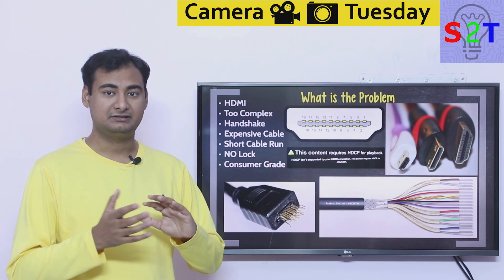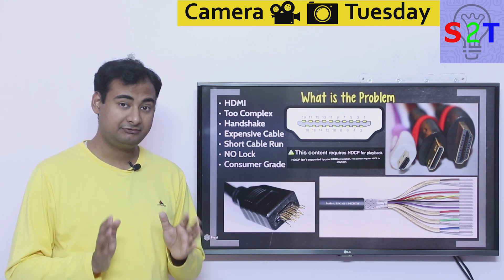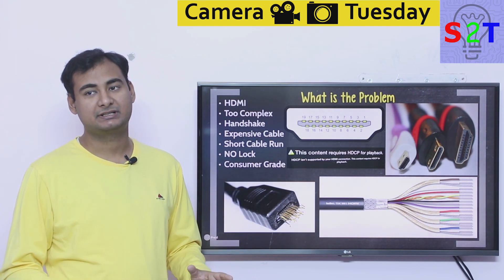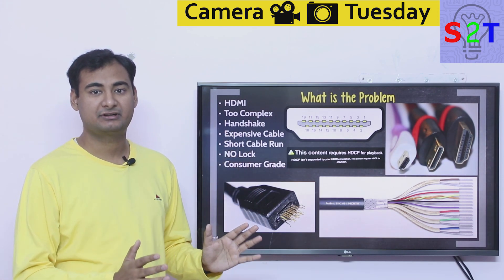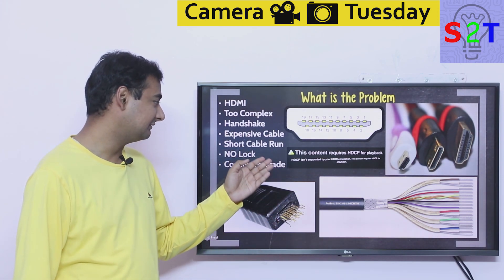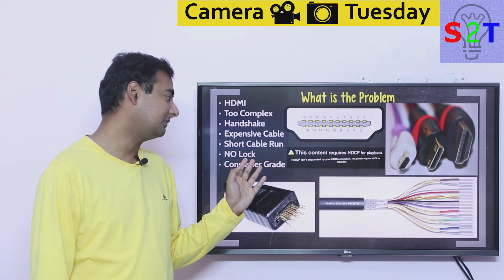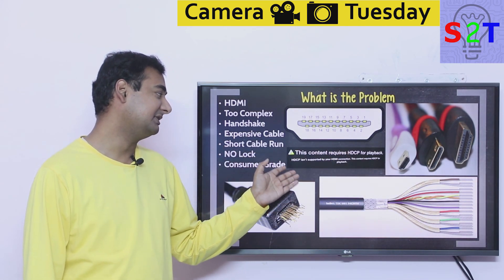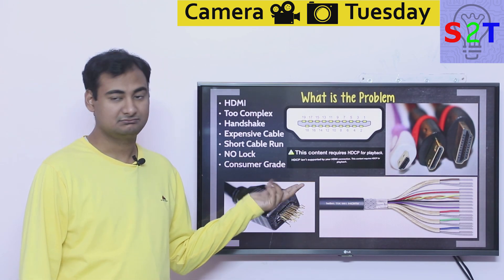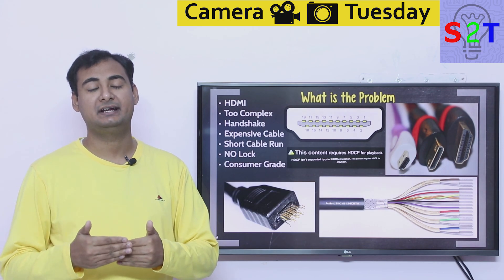Your HDMI output must talk with the receiving end — whether it's a TV or a console — and come to an agreement to work together. If it does not, you can have a perfectly working PlayStation and a perfectly working TV, but both may not work because they'll say 'This content requires HDCP for playback' or 'HDCP is not supported by your HDMI connection.'